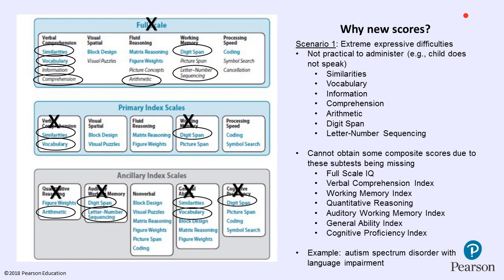In scenario one, we're going to talk about extreme expressive difficulties. In this scenario, the circles on the illustration show which subtests would be impractical to administer if you have a child with extreme expressive difficulties — and all of the verbal comprehension subtests would be among those.